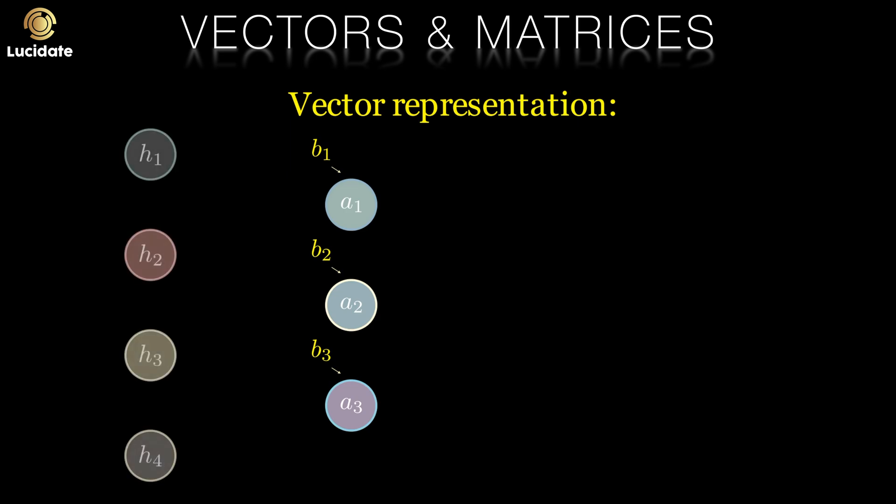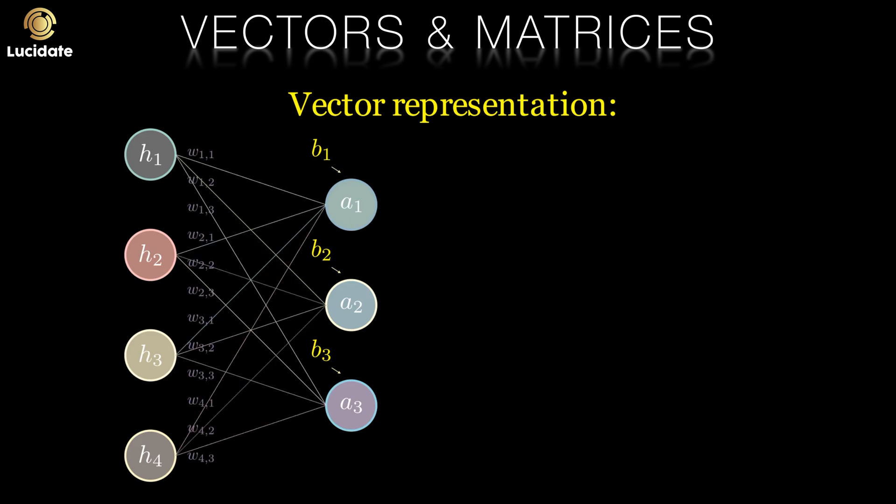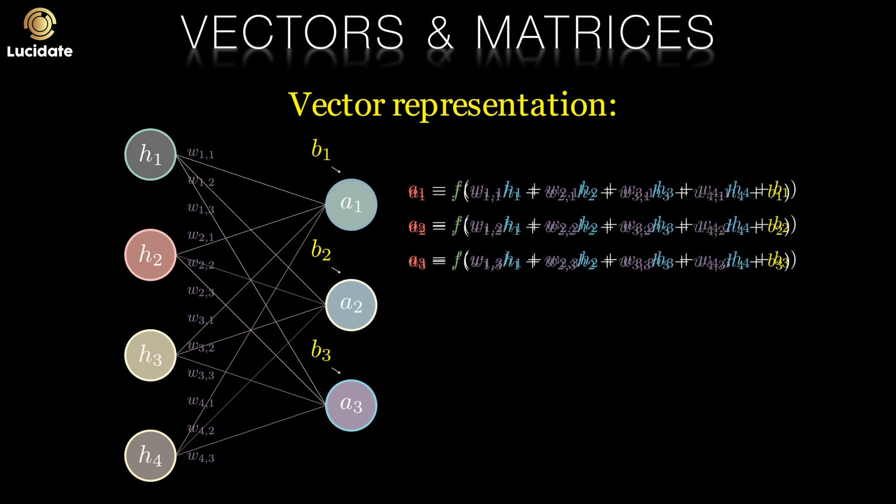If we want to calculate the activations in neurons a1, a2 and a3 we'll multiply the activations of the neurons in the previous layer here h1 through h4 with their associated weights. We then add each neuron's bias and apply the activation function here denoted as f. We can use vectors to represent each layer. The elements in each vector represent the activation of each neuron in that layer. We can also use a vector to represent the biases of every neuron in that layer. The weights that multiply the activations in the previous layer can be held in a matrix. This vector and matrix notation helps us write out the equations in a way that they'll generalize to any shape and size of network.